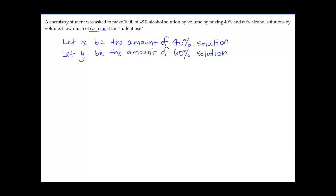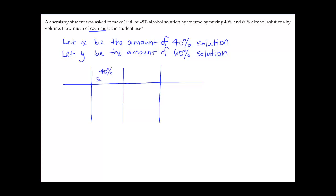Rather than jumping straight to equations, a chart can be helpful. We compare quantity versus concentration value. The first column is the 40% solution (amount x), the second is the 60% solution (amount y), and the final column is the target solution. For the amount row: x liters from the first bottle, y liters from the second, and the final amount is 100 liters total.